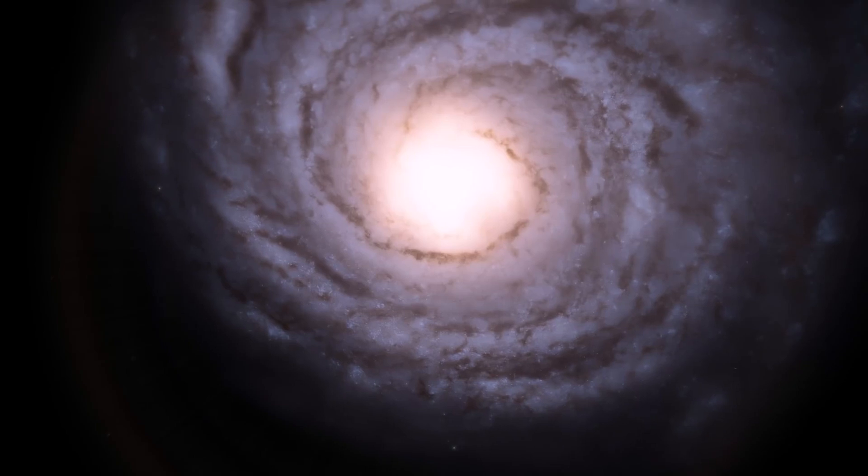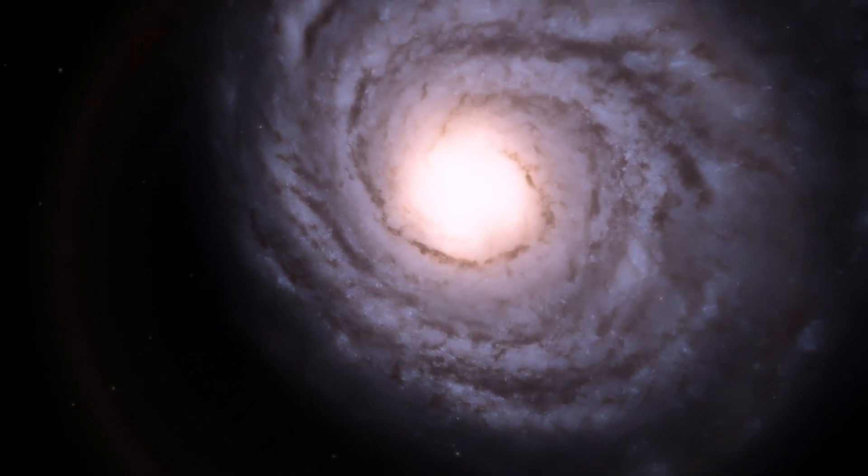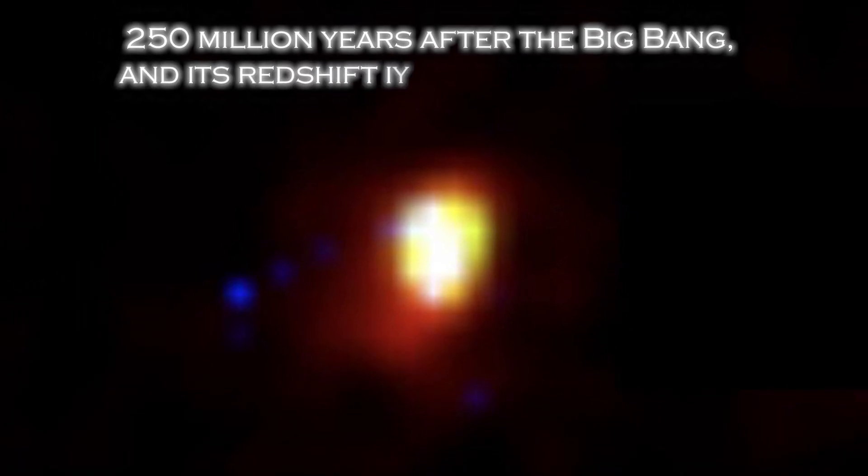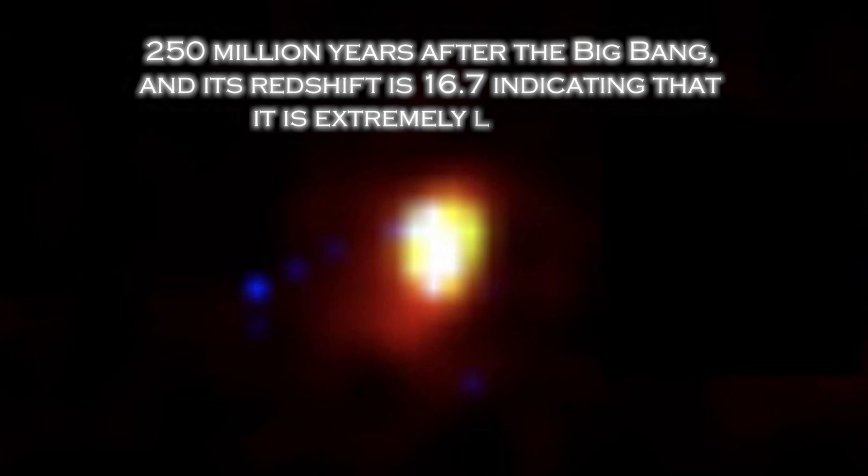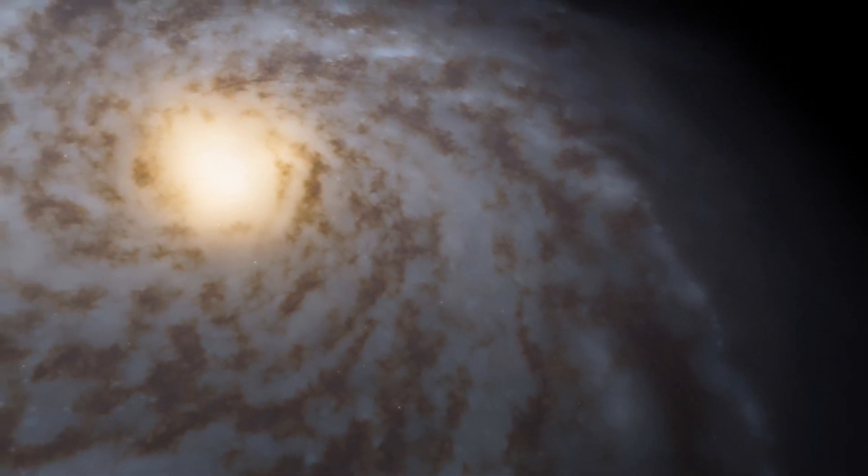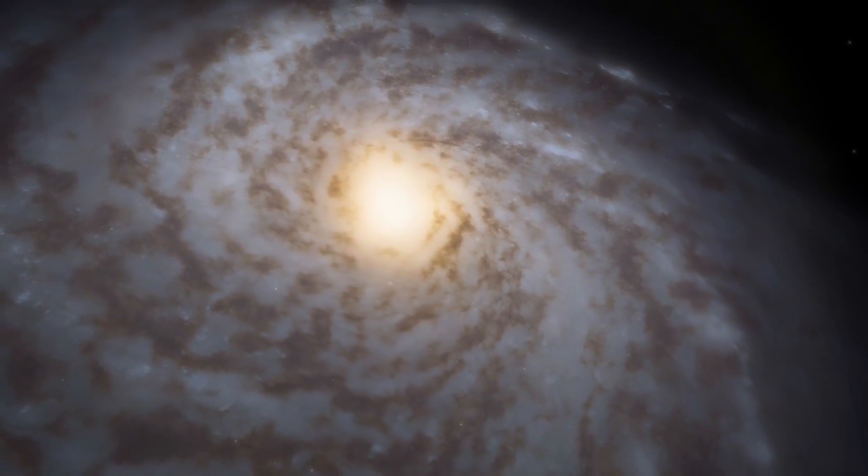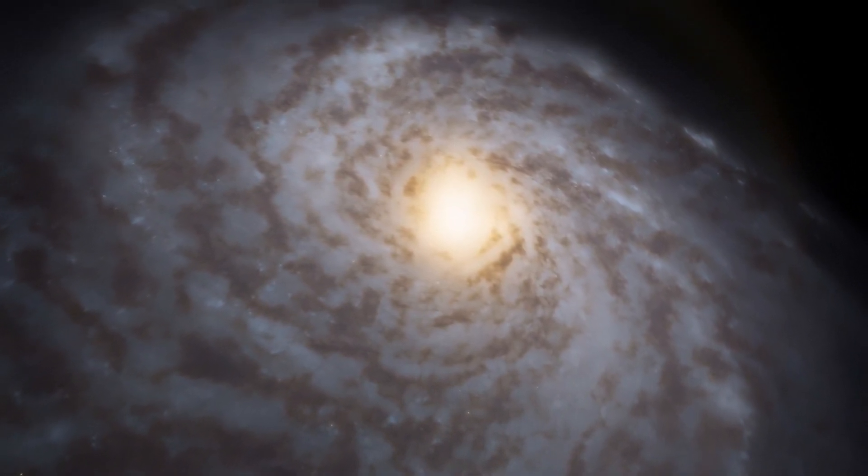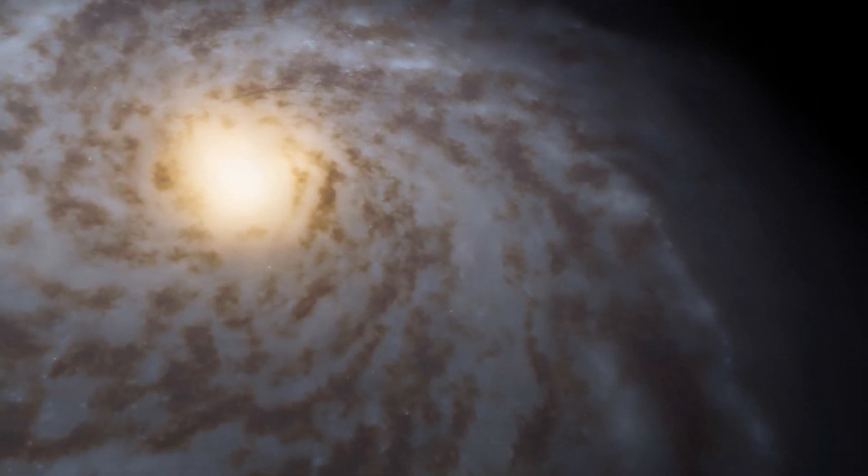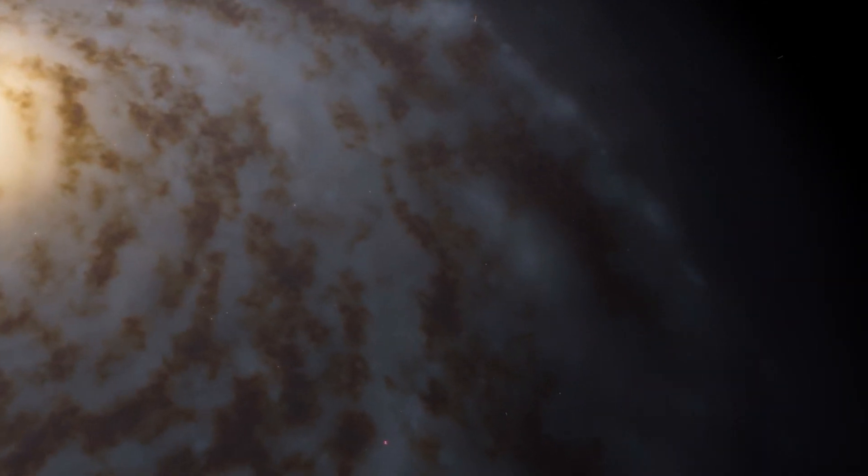You may already be impressed by the two objects mentioned above, but there are still more wonders to be discovered, such as the candidate galaxy Z-93-316. This object formed 250 million years after the Big Bang, and its redshift is 16.7, indicating that it is extremely far away, while observing it as if it appeared in the infancy of the universe. The discovery of Z-93-316 is the result of a specialized program that uses advanced technologies to capture images of distant galaxies. The science team is currently in the process of confirming the redshift using spectroscopy, a method that involves analyzing the spectrum of light emitted by the galaxy to determine its distance.